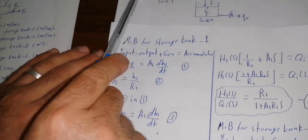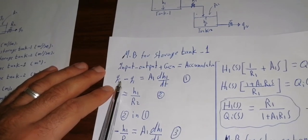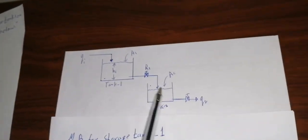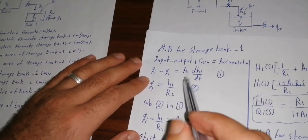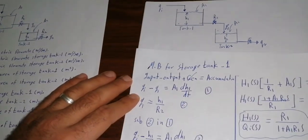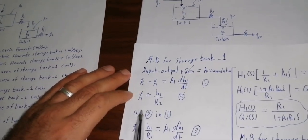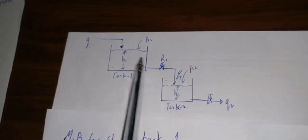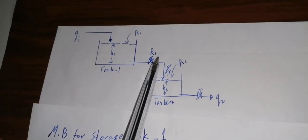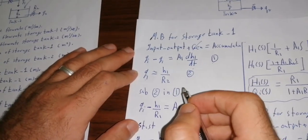Looking at the diagram, QI is the input, and Q1 is the output of tank 1. There is no chemical reaction, so generation equals zero. The accumulation term is A1·dH1/dt, representing the change of height with time. We also note that Q1 is proportional to H1 and inversely proportional to R1, so Q1 = H1/R1.